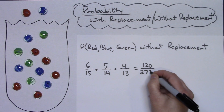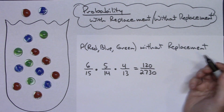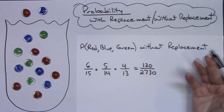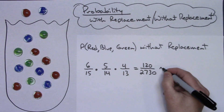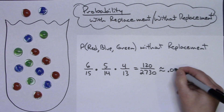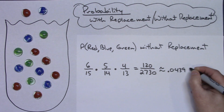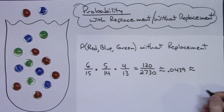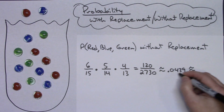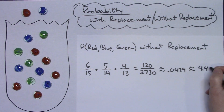So that's your probability. Converting to a decimal, that's about 0.0439, and as a percent that's roughly 4.4 percent.